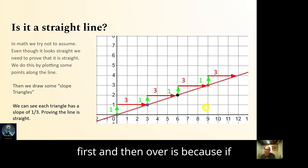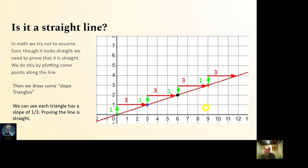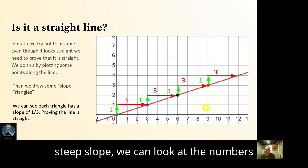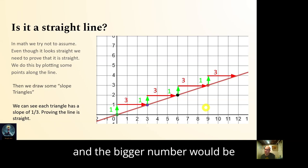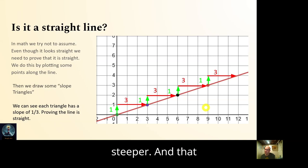The reason we go up first and then over is that if we want to know whether something has a steeper or less steep slope, we can look at the numbers — the bigger number indicates a steeper slope.